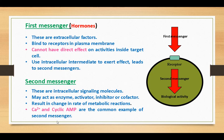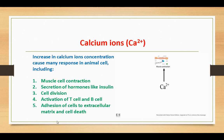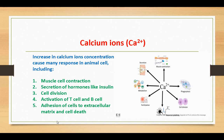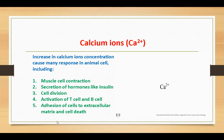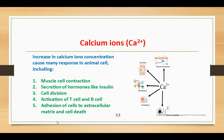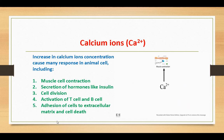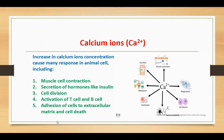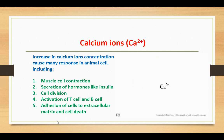Calcium 2+ ions and cyclic AMP are the common examples of second messengers. Calcium ions are one type of second messenger and are responsible for many important physiological functions. An increase in calcium ion concentration causes many responses in animal cells, which includes: muscle cell contraction, secretion of hormones like insulin, cell division, activation of T cells and B cells, adhesion of cells to the extracellular matrix, cell death, fertilization, and neurotransmitter release.